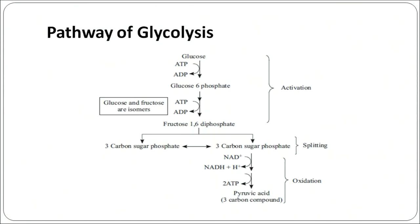This is the pathway of glycolysis. Glucose is activated with the help of ATPs to form glucose-6-phosphate. Another ATP is utilized to produce fructose 1,6-diphosphate. Then comes the splitting part where glucose is split into two three-carbon sugar phosphates. These two products are interconvertible, and by the process of oxidation they release two pyruvic acid molecules. In this step, NAD is reduced to NADH and ATP is also directly produced as a molecule of energy.